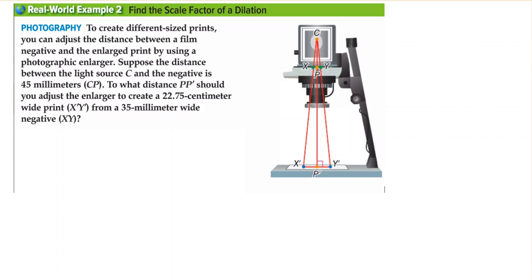I'm going to redraw this diagram so we can look at it a different way. This is point C, here are the rays. This will be X'Y' and this is point P'. The length of this is 22.75 centimeters.